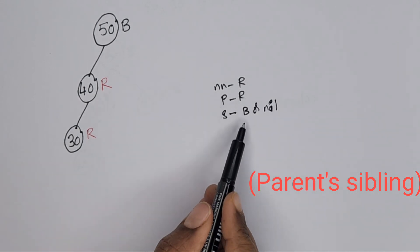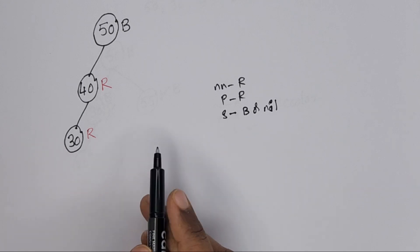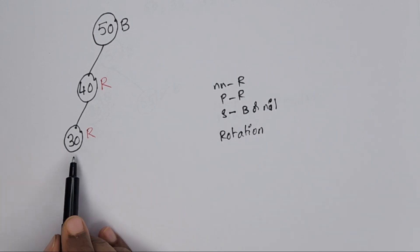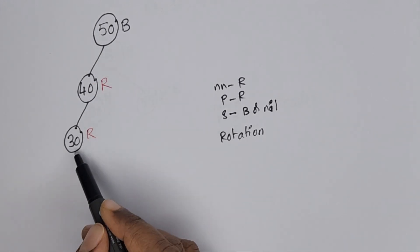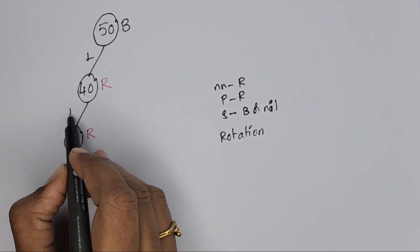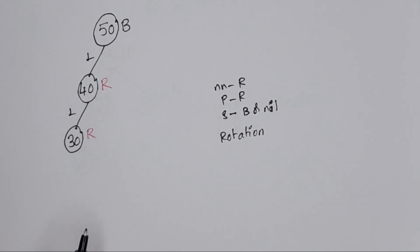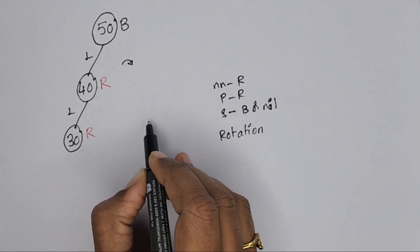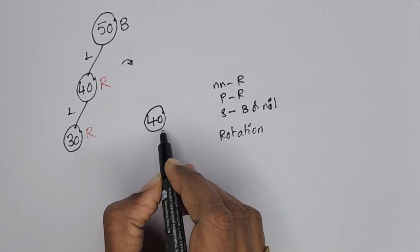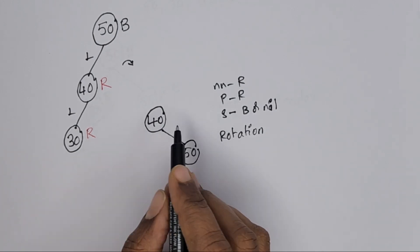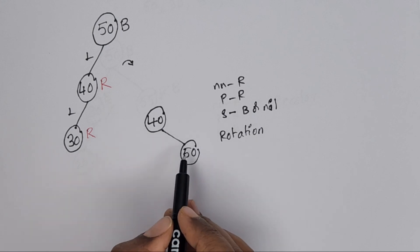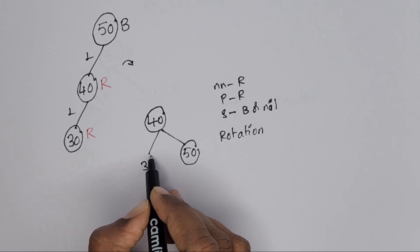If there is no sibling or the sibling color is black, we perform a suitable rotation. The new node is 30. From the grandparent, 30 was added on the left-left side. So we perform an LL rotation, which is a single right rotation. The middle node, 40, becomes the new root. 50 goes down to become the right child of 40. After rotating clockwise, 50 becomes the right of 40 and 40's left child remains 30.